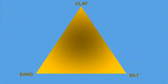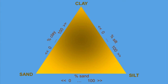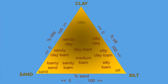Often, a sedimentary layer will incorporate different percentages of clay, silt, and sand, as well as larger rock inclusions. Different compositions can be discerned in categories such as silty clay, sandy clay, and others.